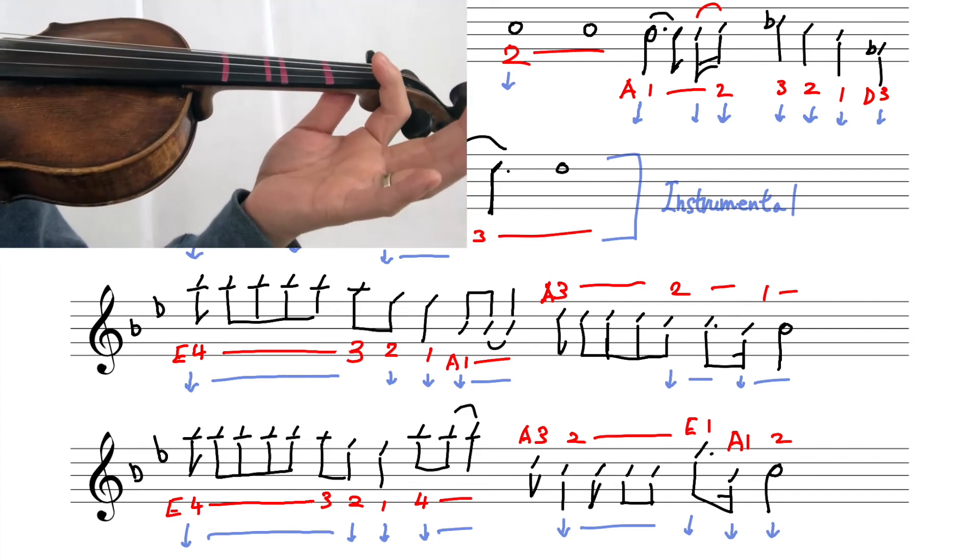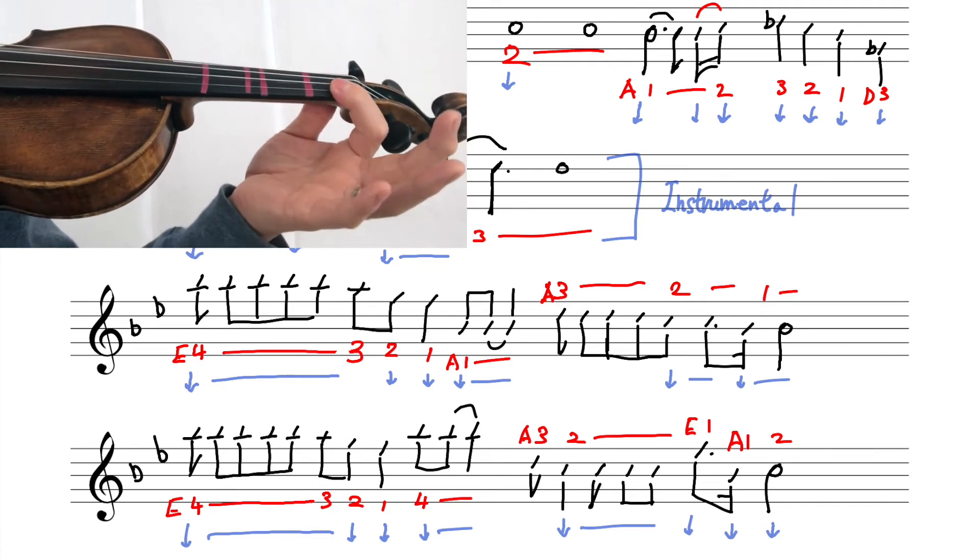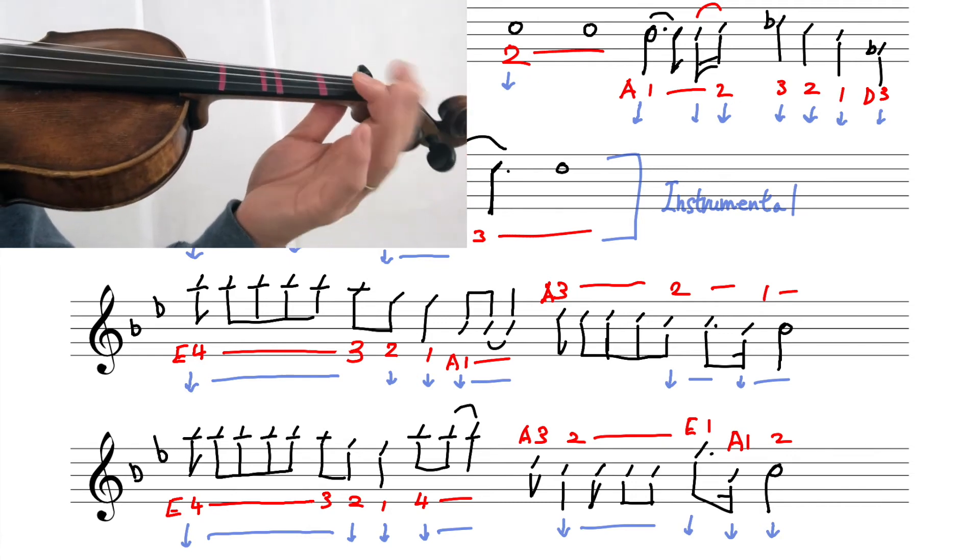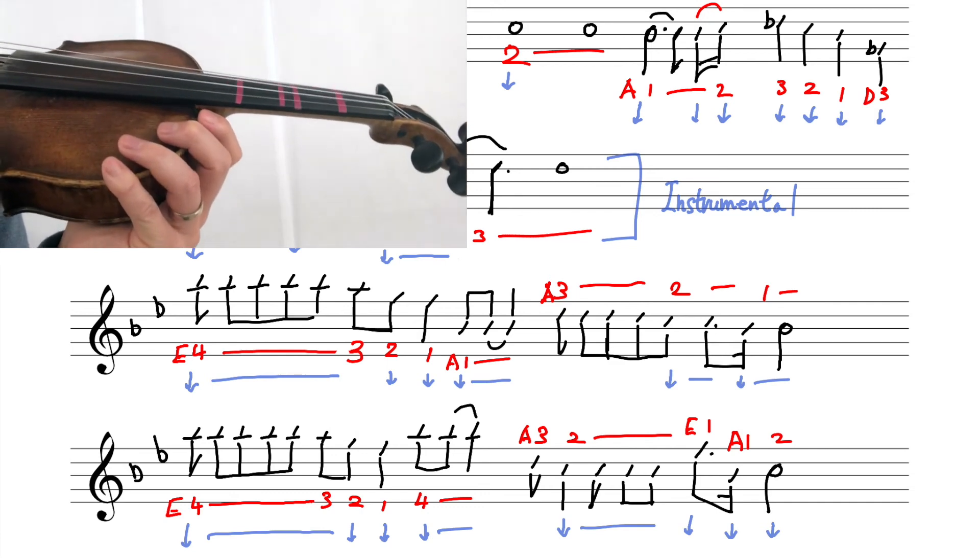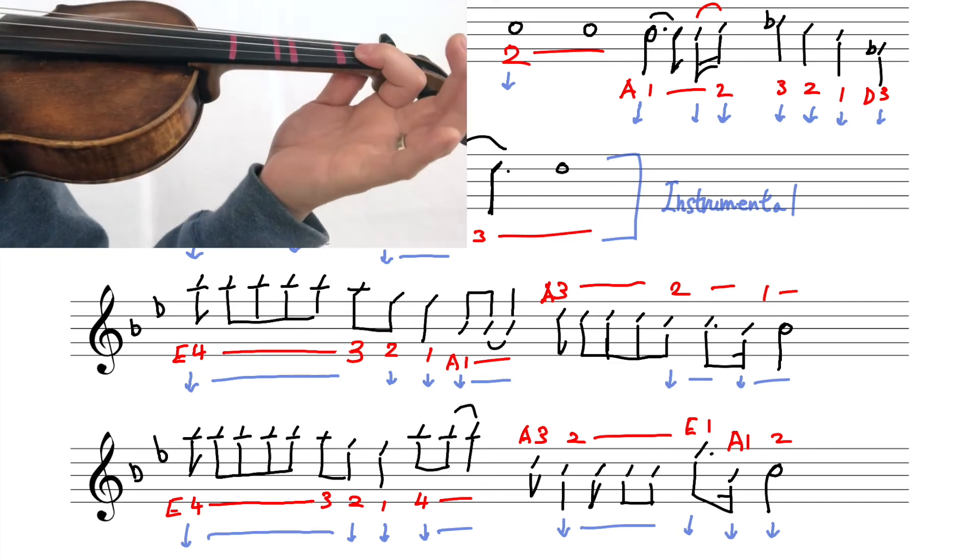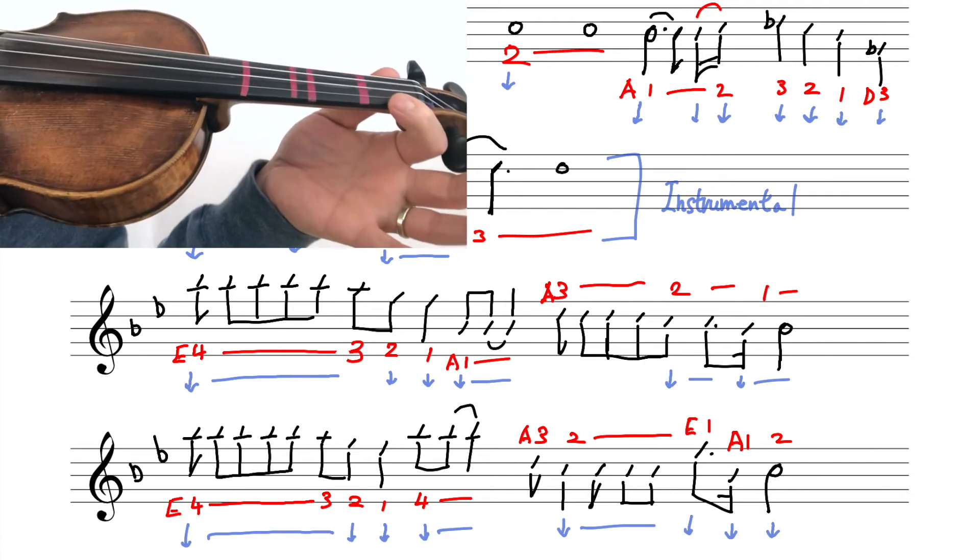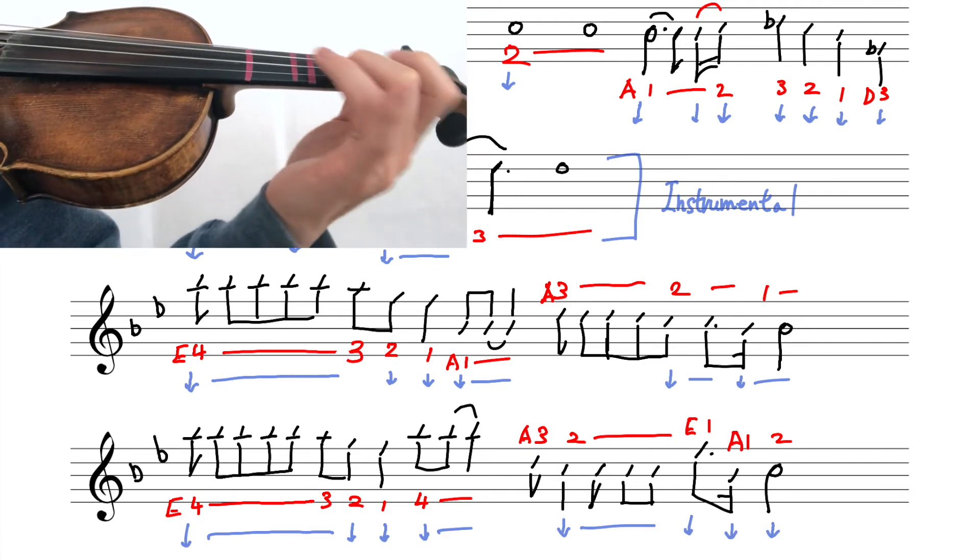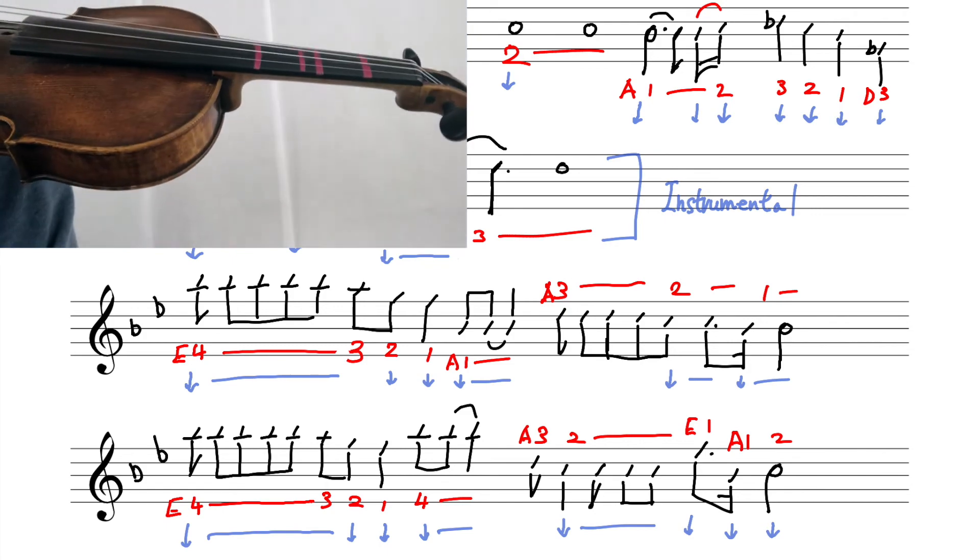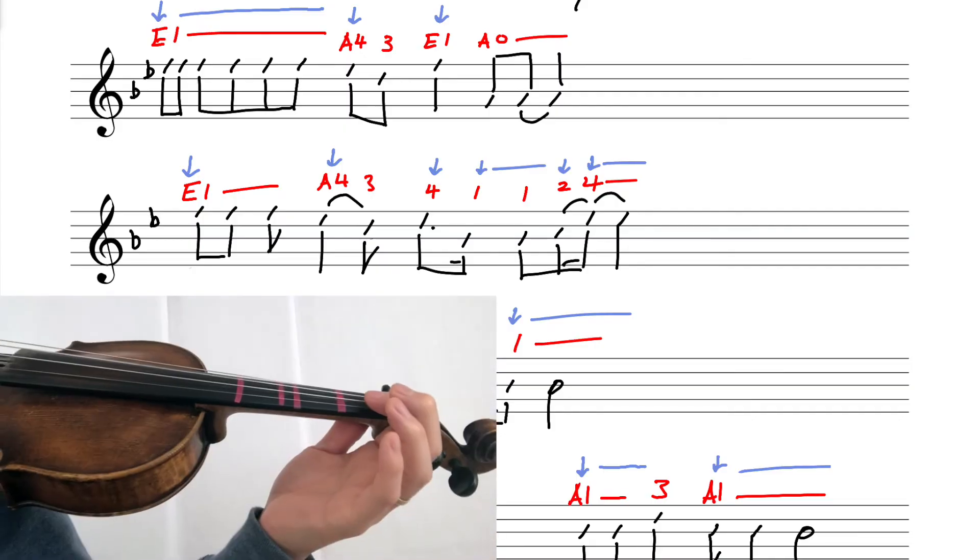So again, you see the E low one to A low one a lot, right? Coming right after each other. So I will bridge that. When I put down the E low one, I'll put down the A low one too. So that, this is at the last notes on this page. So instead of doing this, this, all ready. Alright, final page.